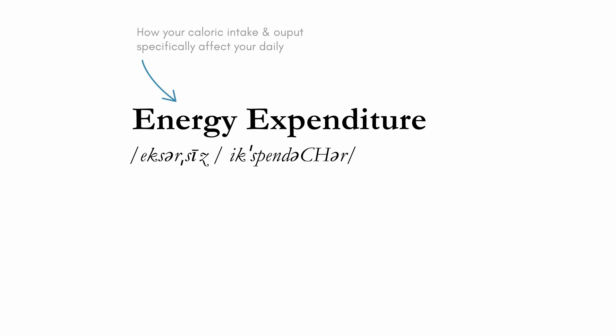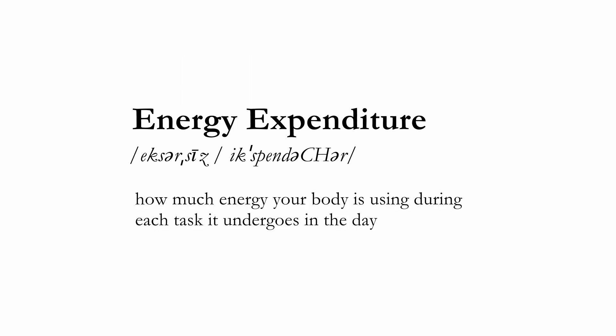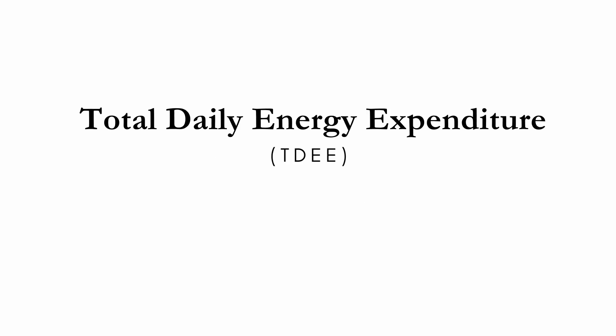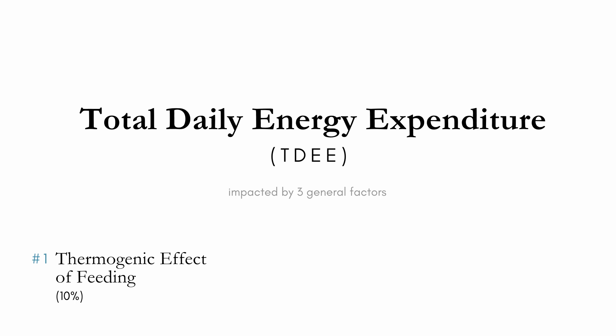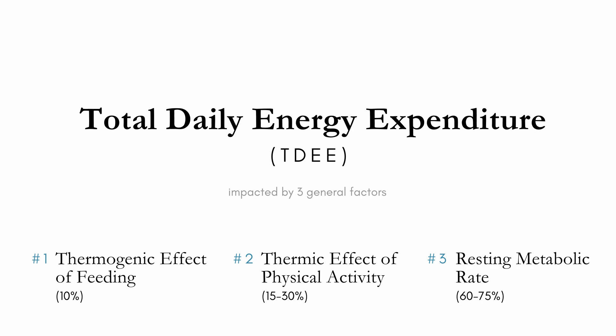I will discuss how your caloric intake and output specifically affect your daily energy expenditure. These terms may seem a little unfamiliar, so let me break them down. Energy expenditure is essentially how much energy your body is using during each task it undergoes in the day. Our total daily energy expenditure is impacted by three general factors: one, the thermogenic effect of feeding; two, the thermic effect of physical activity; and three, your resting metabolic rate.